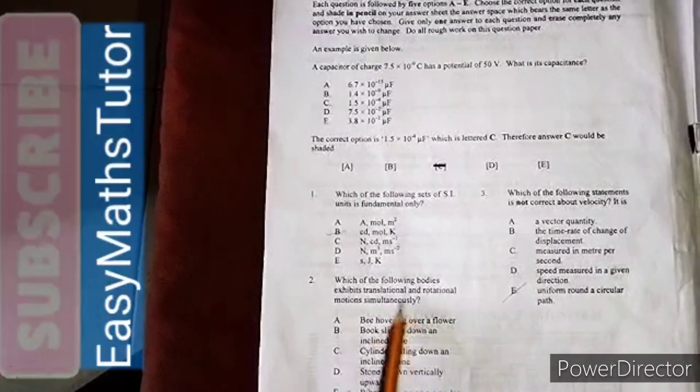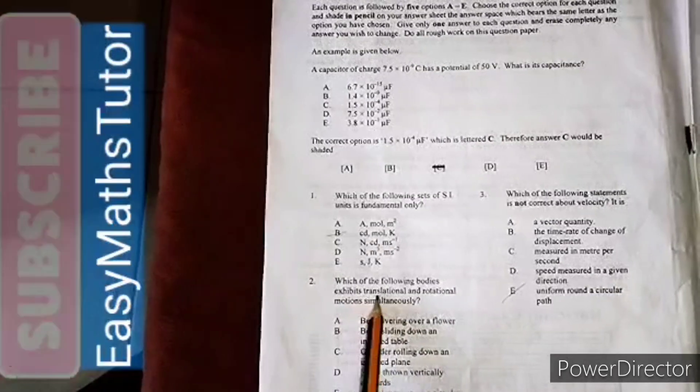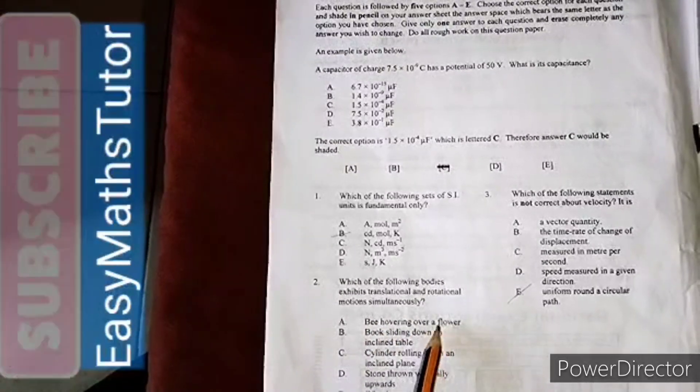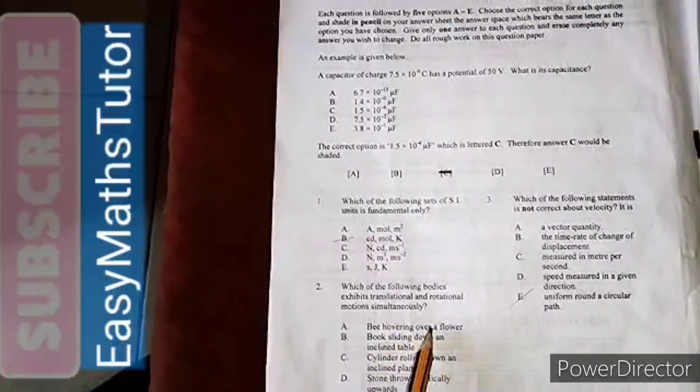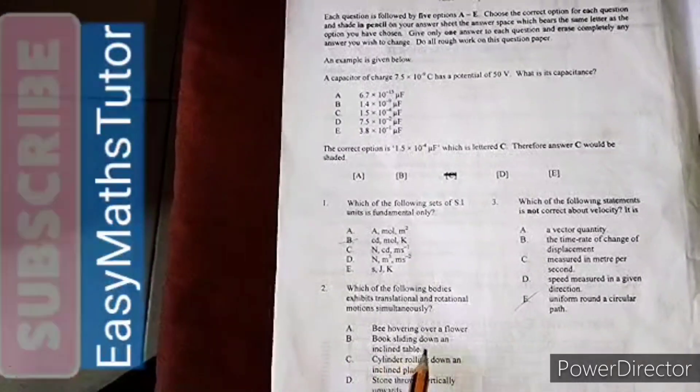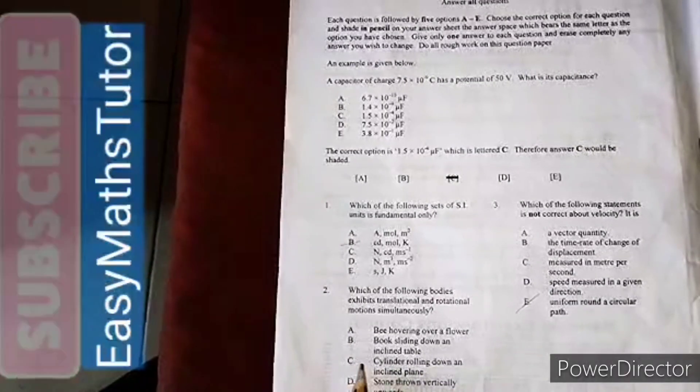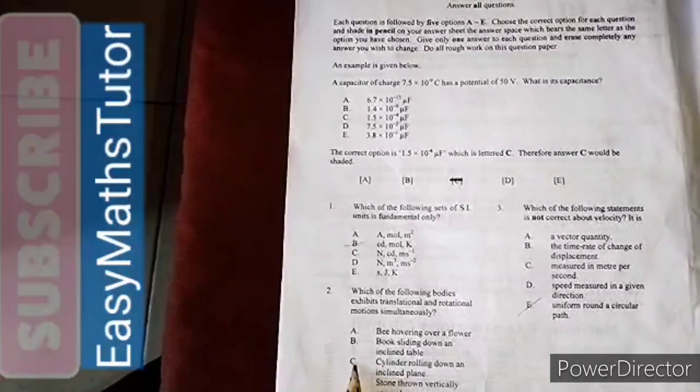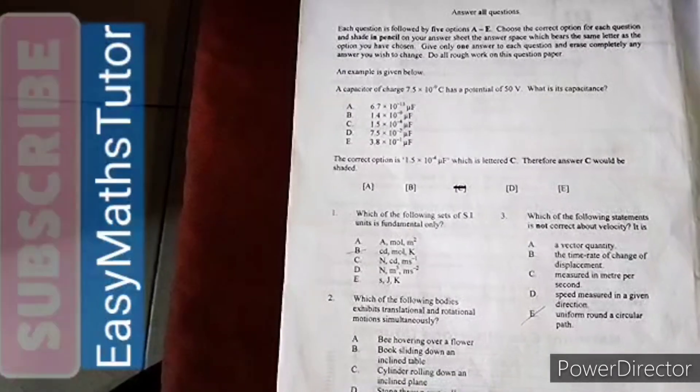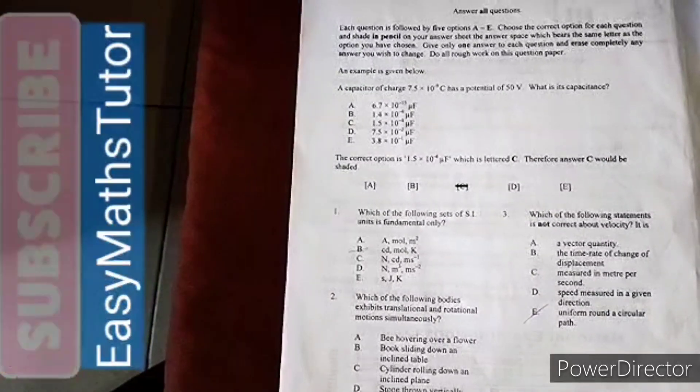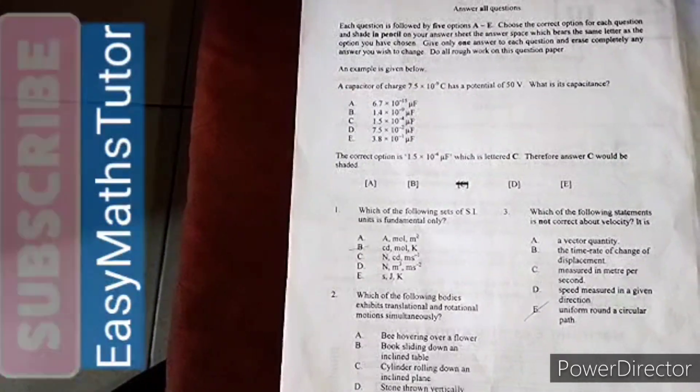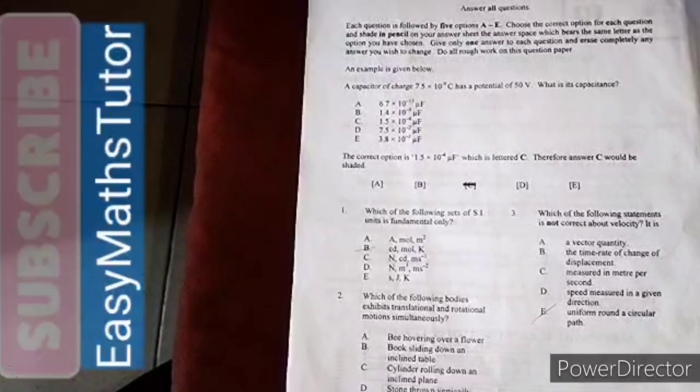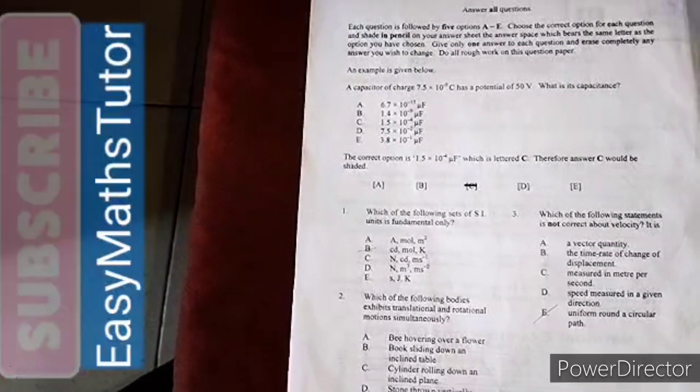The first option says a bee hovering over a flower - that's basically random motion. B, a book sliding down an inclined table - that's translational motion. C, a cylinder rolling down an inclined plane - that is actually rotational and translational. D, a stone thrown vertically upwards - that is translational motion. E, a wheel moving on a circular track.